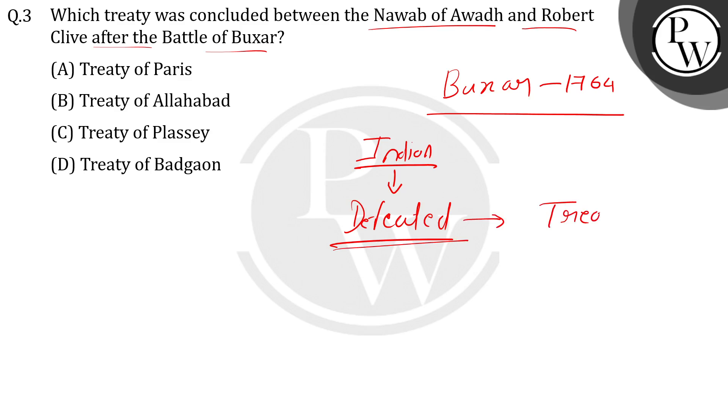After their defeat, treaties were made by the Britishers with the defeated rulers. We will talk about three people: Mir Qasim, the Nawab of Awadh, and the Mughal emperor.